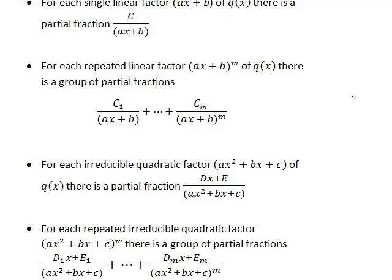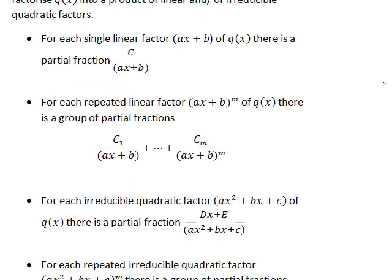Over the course of several examples we will go through these cases and a combination of cases. In this first recording on this topic we will focus on the case where the denominator factorises into a series of single linear factors of the form ax plus b. For each such factor there corresponds a partial fraction of the form constant c divided by ax plus b. Let's see how this applies to an actual example.